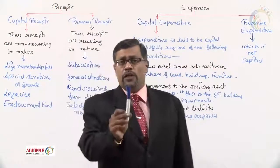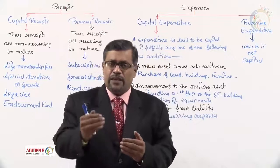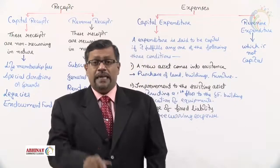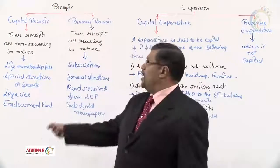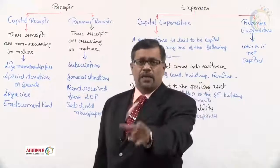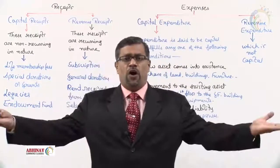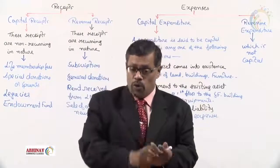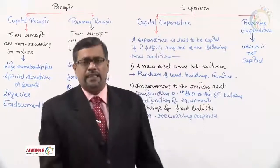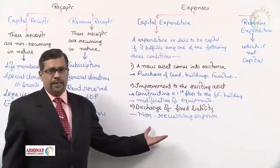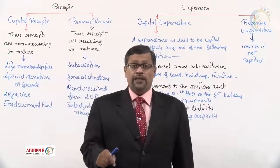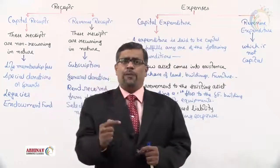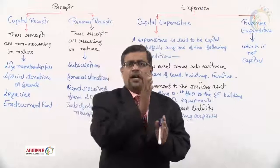This part is very important when learning not-for-profit organizations because as we proceed further, there are accounts to be prepared — the income and expenditure account. In that account, only those items that are revenue in nature are taken: if it is a revenue receipt or revenue expense, it is entered; capital items are excluded. You must know whether an item is capital or revenue, which is why one has to be perfect with this part. In the next video we will take up a few problems and classify whether items are capital or revenue.